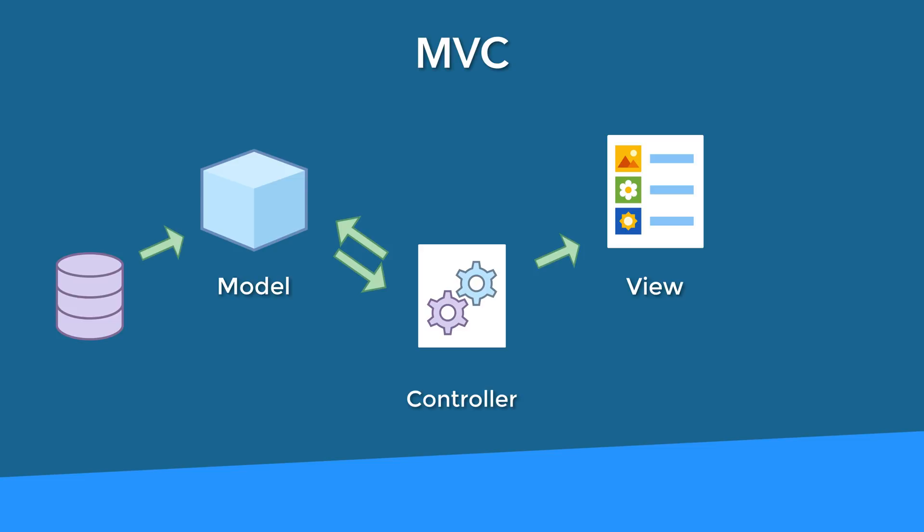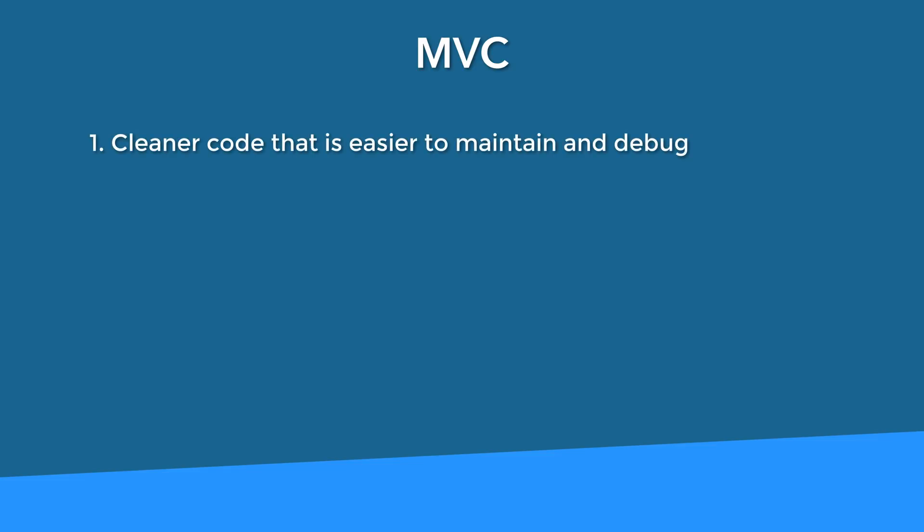So as you can see, the view, controller, and model all have their own responsibilities. You might ask: why would we even want to separate these different responsibilities? Well, there are a couple of reasons. Number one is to keep things simple. When your app architecture is clean and simple like this, that leads to code that is less likely to have bugs and easier to troubleshoot when there is a problem, because you know where to look.